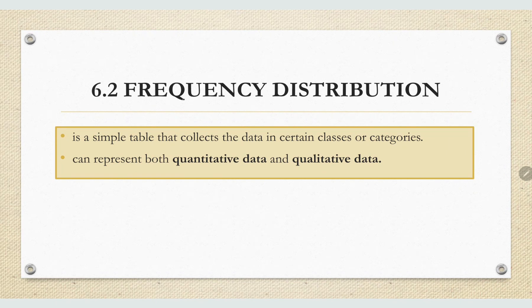6.2 Frequency Distributions. It's a simple table that collects the data in certain classes or categories. It can represent both quantitative data and qualitative data.